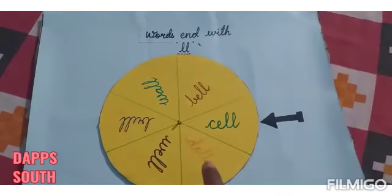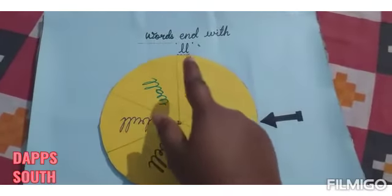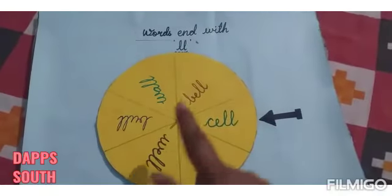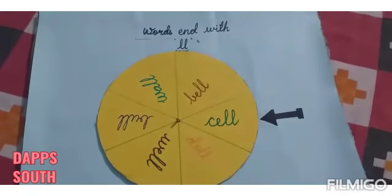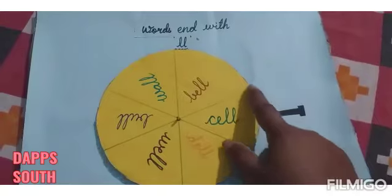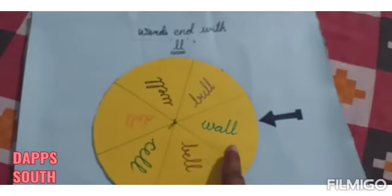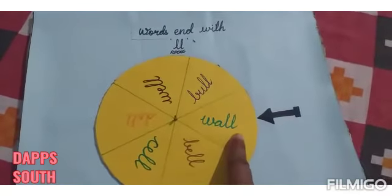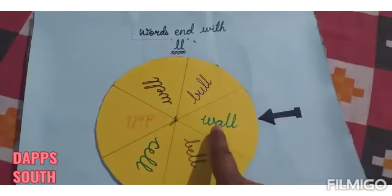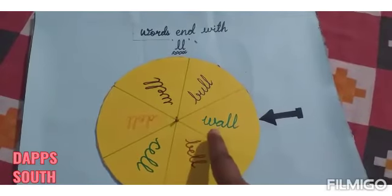These are the words that end with LL. This is a word wheel. Now let's spin the word wheel. What is this? This is W-A-L-L. Wall.